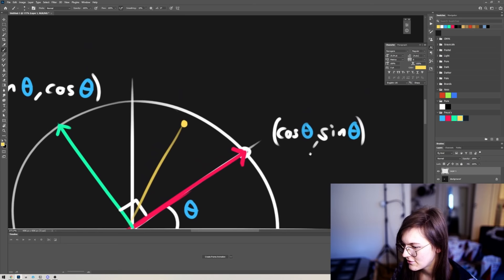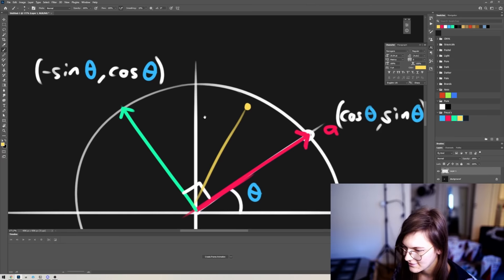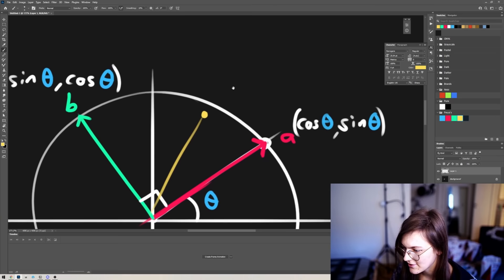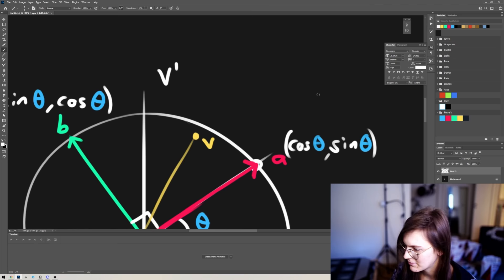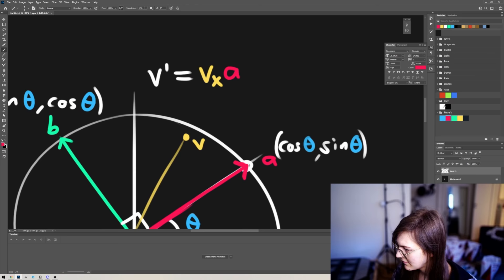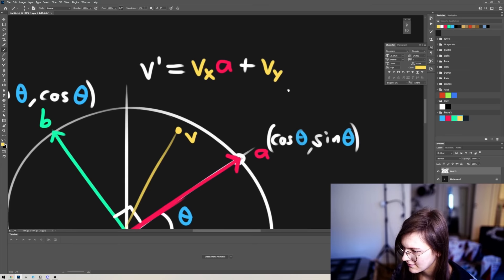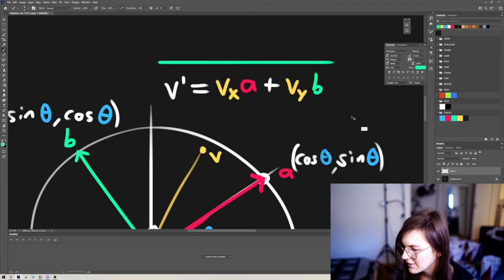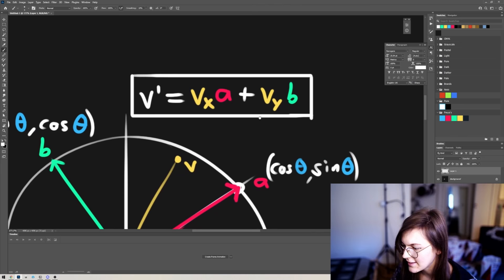So let's call this one a, and let's call this one b. Then our final position, if this is v, then v prime, as in the results, would be the x coordinate of v multiplied by a, and then plus the y coordinate of v multiplied by b. And so this is a complete rotation. This effectively rotates the vector by the angle theta. And again, theta is baked into a and b here.